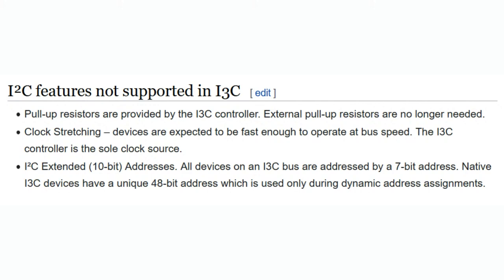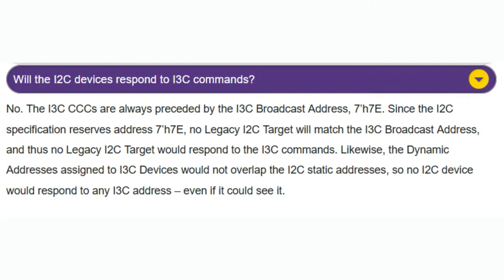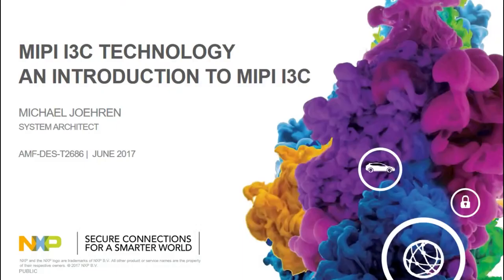They no longer support 10-bit addresses because basically nothing ever supported them — they just said nobody used this, so they tossed it out. I really like that they got rid of clock stretching, but they added things to help with that. I3C commands go to address 0x7E because 0x7E is a reserved I2C address — anything above 0x78 is unavailable, anything below 10 is unavailable, and 0x00 is the all-call. In the text version of this INMPI, I'm going to link to a really good presentation from NXP about I3C which goes into low-level details.